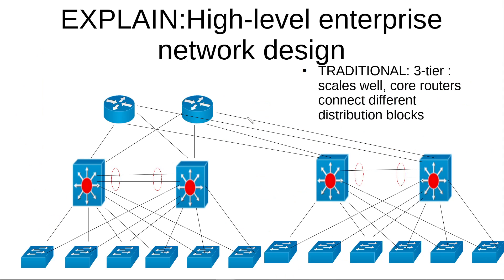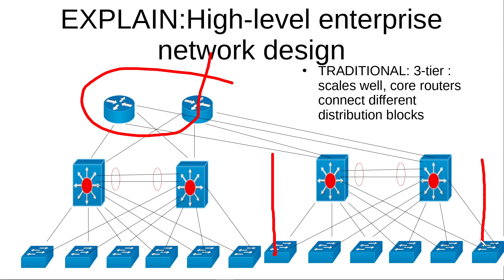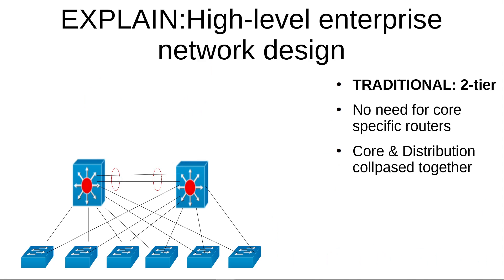The utility of the three-tier design is that you can easily add new distribution blocks to your enterprise network. But if your enterprise network is not that big, you can collapse the core and distribution layer into a single one. You will end up with two layers only — that is known as the traditional two-tier design.